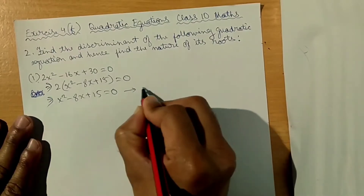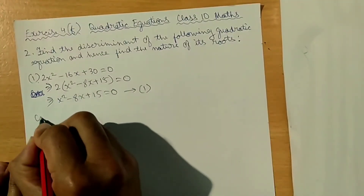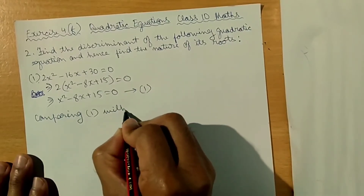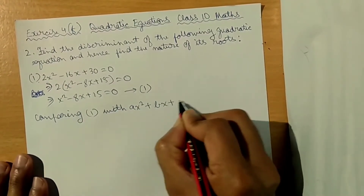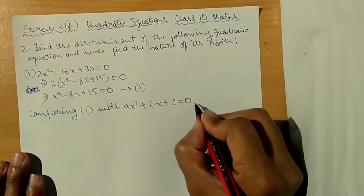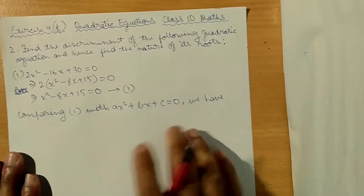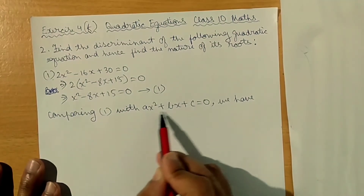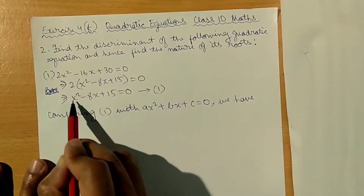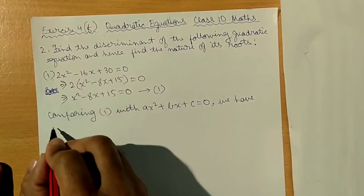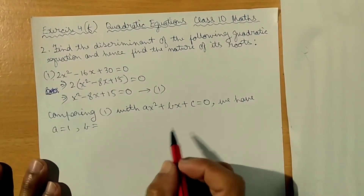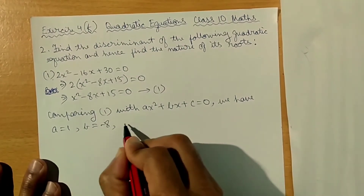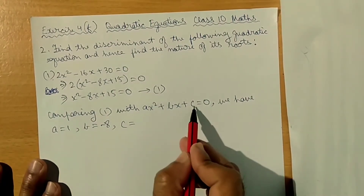I will put this as Equation 1. Now, comparing Equation 1 with the standard form x² plus bx plus c equal to 0, we have a is equal to 1, b is equal to minus 8, and c is equal to 15.